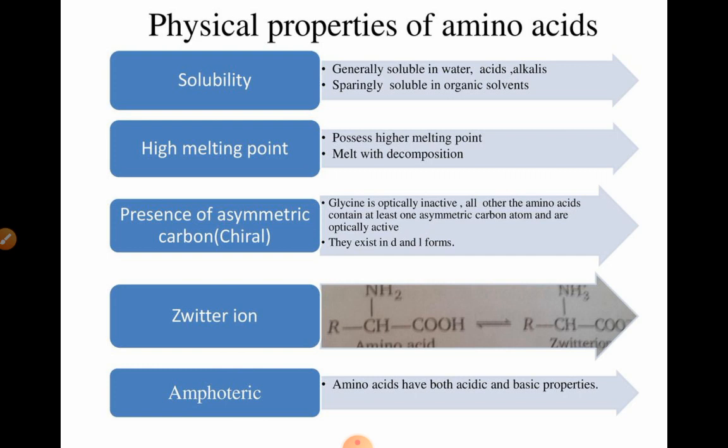The majority of amino acids form a zwitterion, meaning the amino acid carries both a positive and a negative charge simultaneously. Amino acids also have both acidic and basic properties; hence they are amphoteric in nature.